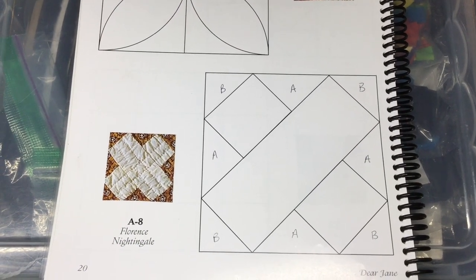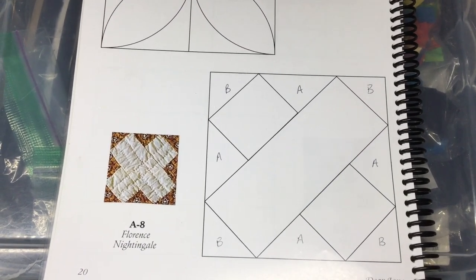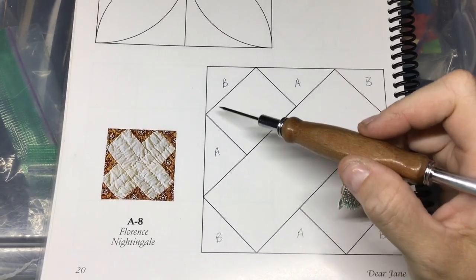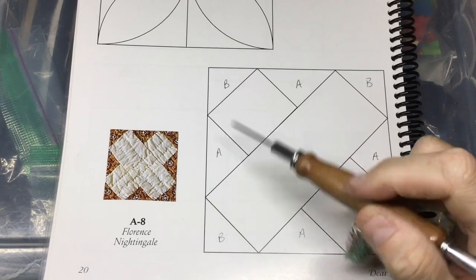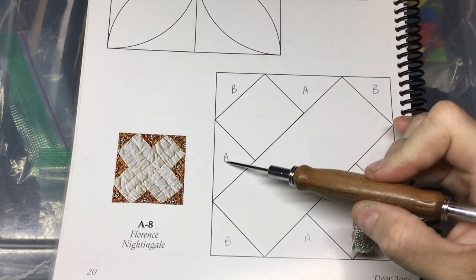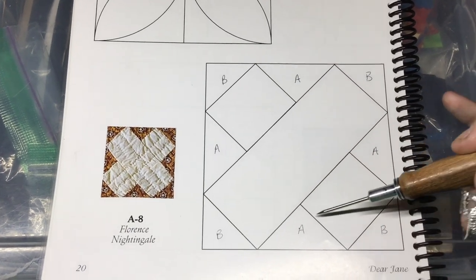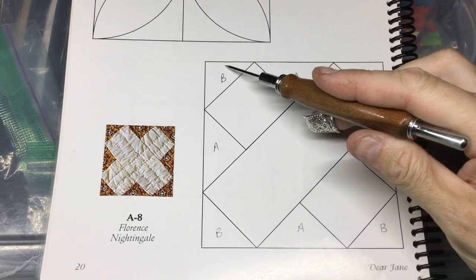Now we're up to A8, and A8 is going to be assembled like an on-point block. So what we have here is we have a row, if you look at it sideways. We have a row here, and then this plus this is a row, and then this is a row, and then we've got these two end corners.